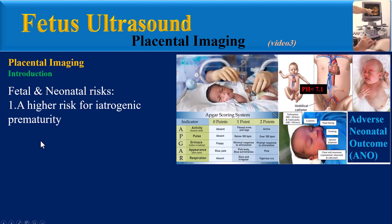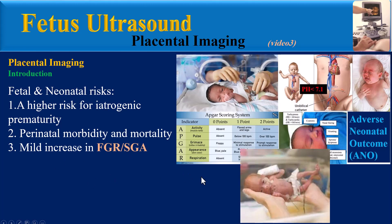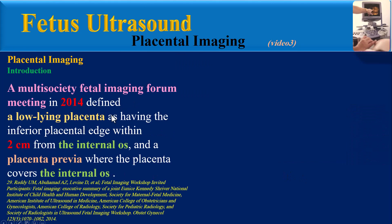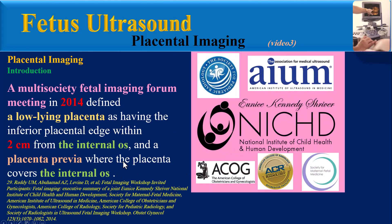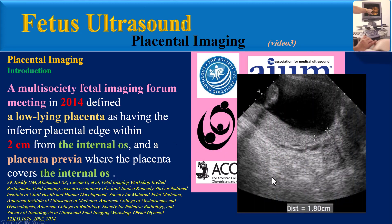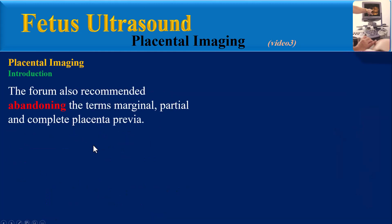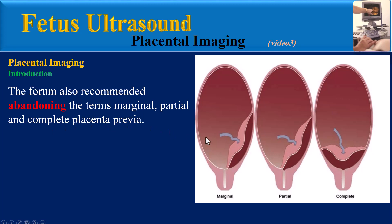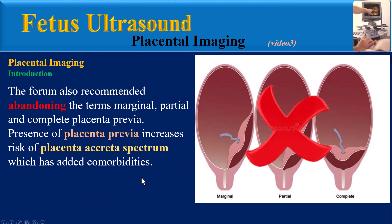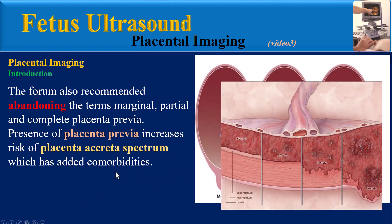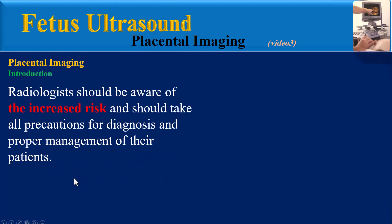Fetal and neonatal risks of placenta previa include higher risk for iatrogenic prematurity, perinatal morbidity and mortality, and mild increase in FGR and SGA fetuses. A multi-society fetal imaging forum in 2014 defined a low-lying placenta as having the inferior placental edge within 2 cm from the internal os, and placenta previa as the placenta covering the internal os. The forum also recommended abandoning the terms marginal, partial, and complete placenta previa.